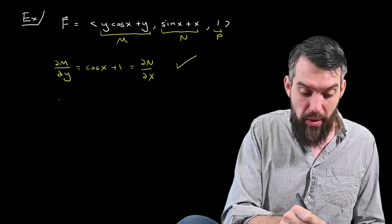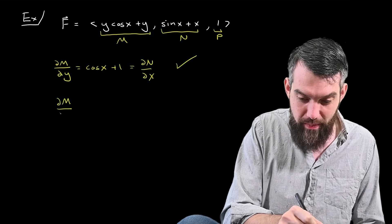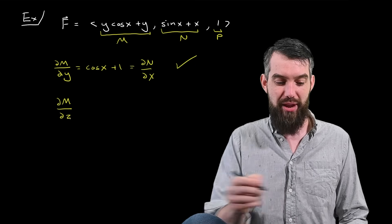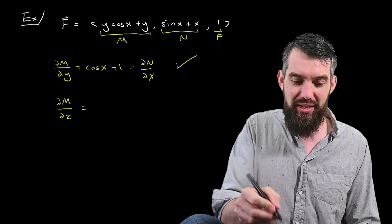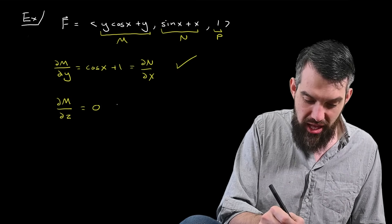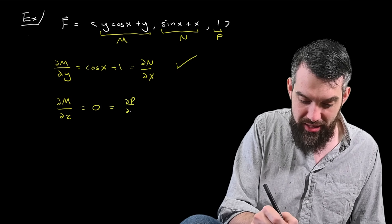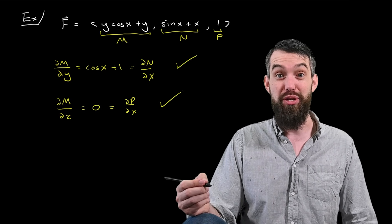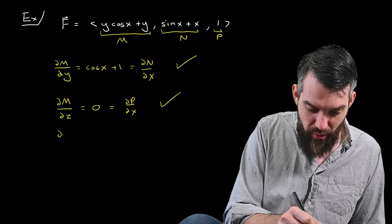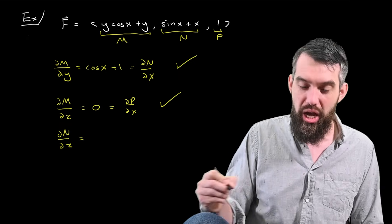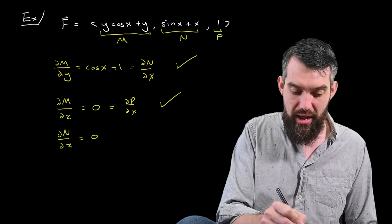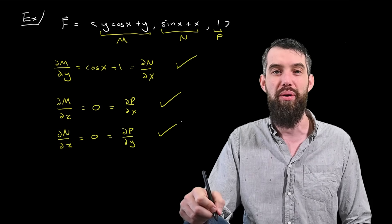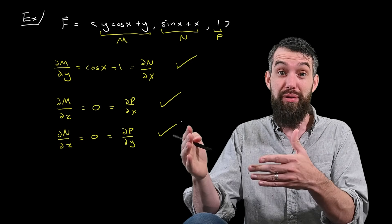I'll do a similar computation. Now I'll take the partial derivative of m with respect to z. There is no z appearing anywhere in m, so that's just going to be 0. And similarly, the partial derivative of p with respect to x — well, p was just y, so this derivative is 0 as well. The second equality has also been verified. And then quickly for the final one, the partial derivative of n with respect to z is again 0, and the partial derivative of p, which is constant with respect to y, is also 0. So all three conditions for being conservative are true.